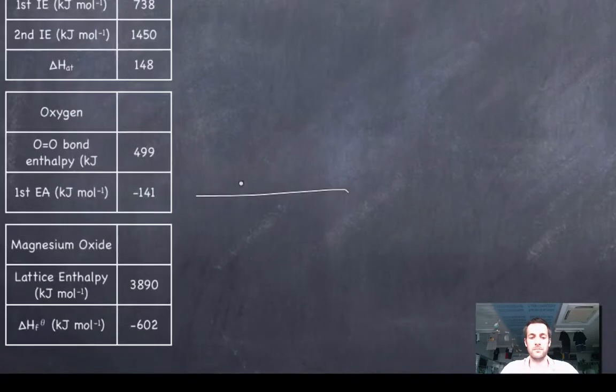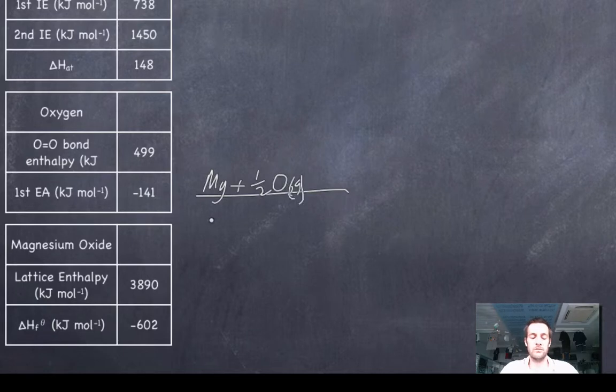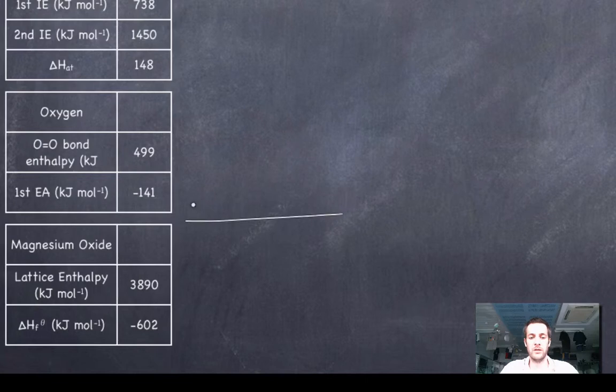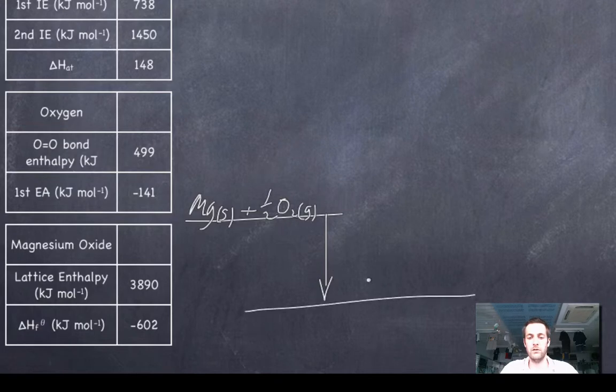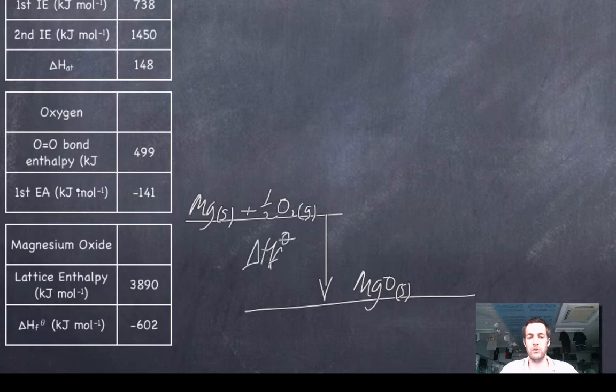What we know is that we can take magnesium as a solid and react it with oxygen, which is a gas in its standard state, and we can form one mole of magnesium oxide. And if we form one mole of a substance from its elements in their standard states, then this is the enthalpy of formation, the standard enthalpy of formation, and we're told here that the standard enthalpy of formation of magnesium oxide is minus 602 kJ per mole.